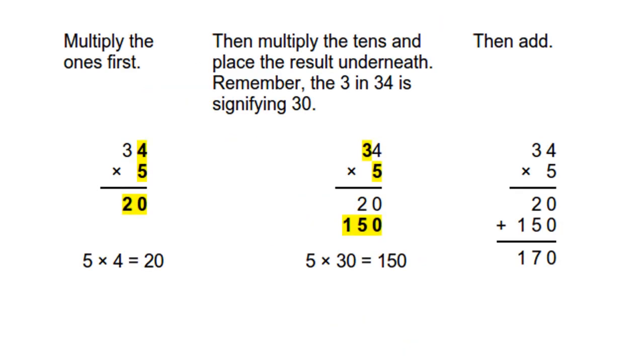Look at multiplication, like 34 times 5. You must first multiply the 1s first, like 5 times 4 is 20. Then you multiply the tens, and place the results underneath. Remember, the 3 in 34 is signified by 30.